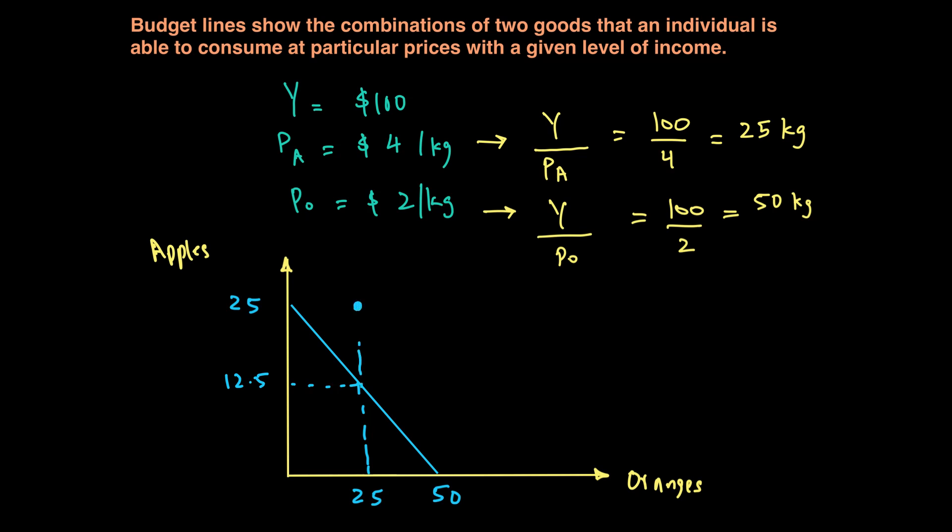For example, if you ask for 25 of oranges and 25 of apples, that's not possible with an income of $100. Because for that you need 25 times 4, or $100 for apples, plus another 25 times 2, or $50. In other words, you require $150 for a combination like this. So all the points on the budget line are affordable while the ones beyond it are unaffordable.